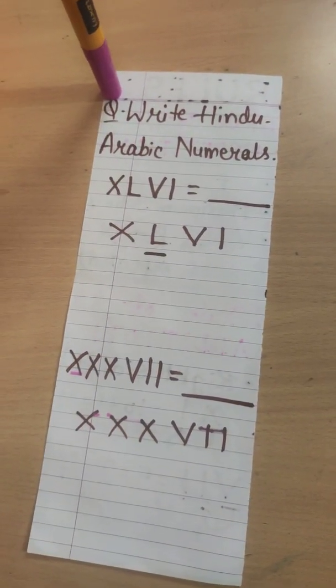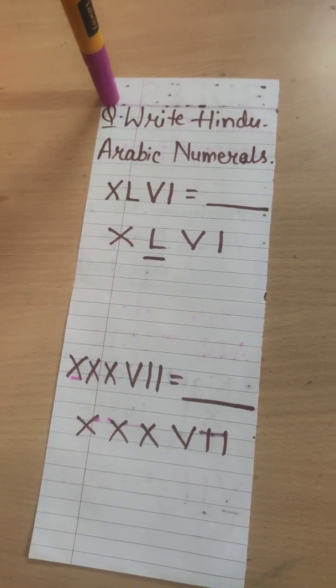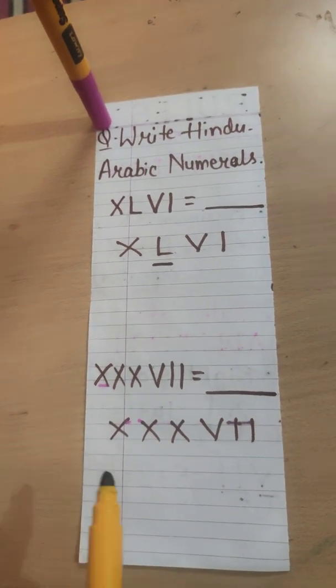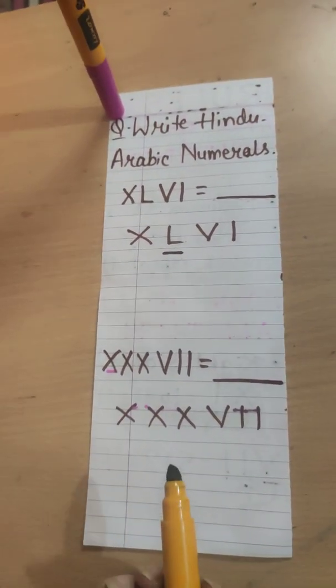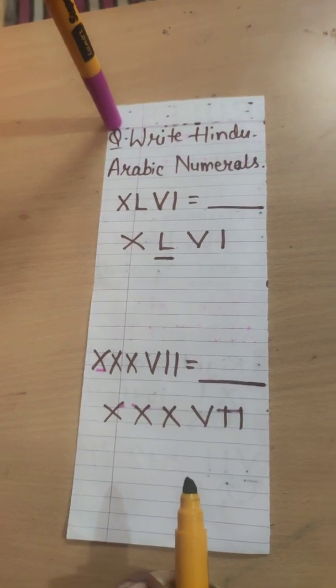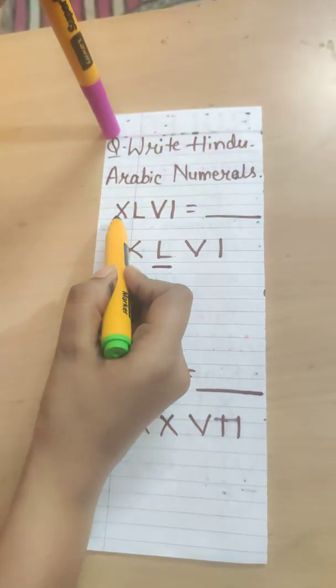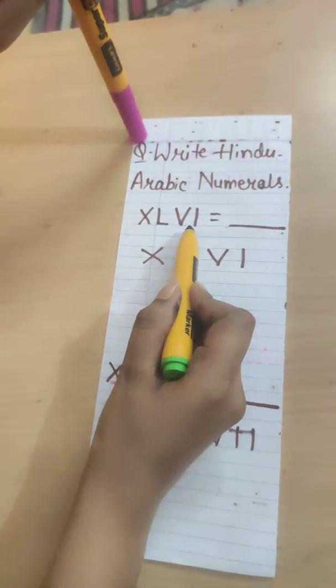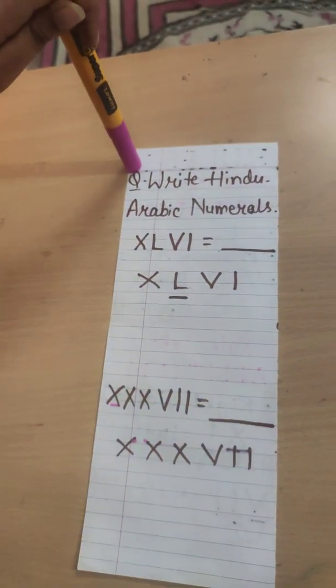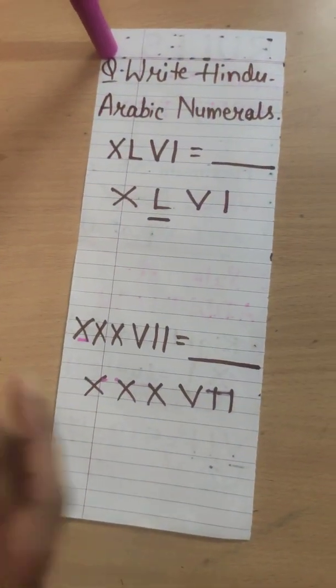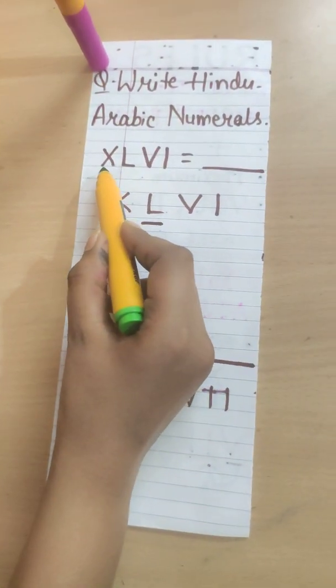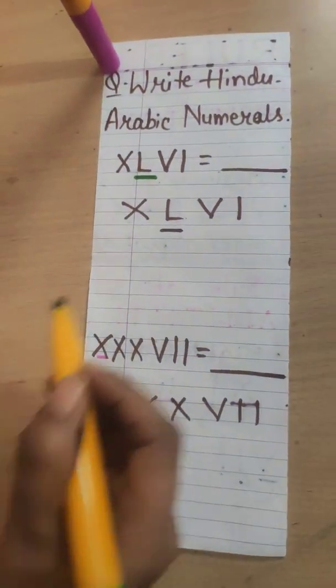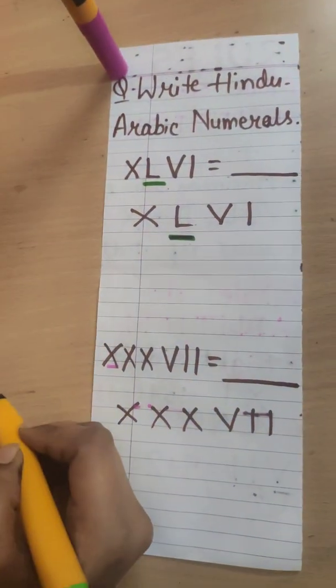Let's solve our next question. Write Hindu Arabic numerals. XLVI. While solving this question, we will first find the greatest number of all. X means 10, L means 50, V is 5, I is 1. Out of these all symbols, L is the greatest one. Let's see this L. L is the greatest one.